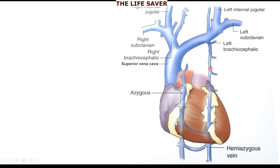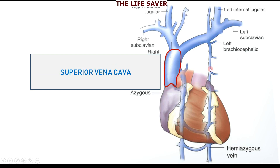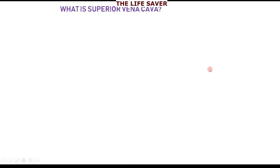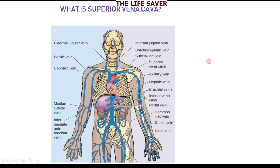Assalamu alaikum. Bismillahirrahmanirrahim. The topic we are going to discuss today is the Superior Vena Cava. It is the wide and short vein which receives blood from all the upper part of the body. The vessel which receives blood from the lower part of the body towards the heart is the Inferior Vena Cava.